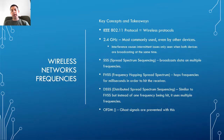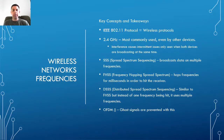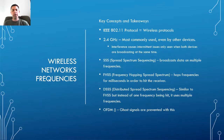The SSSS — Spread Spectrum Sequencing — broadcasts data to multiple frequencies at one time to find where the AP or device is and what frequency they're using, so communication can begin. FHSS, Frequency Hopping Spread Spectrum, hops frequencies every few milliseconds looking for the device it needs to communicate with. Distributed Spread Spectrum Sequencing is similar to FHSS, but instead of hitting one frequency at a time, it hops multiple frequencies simultaneously.